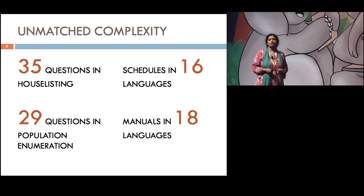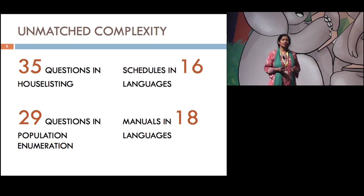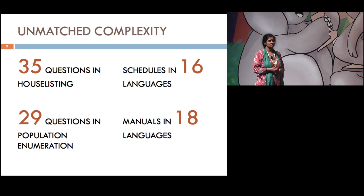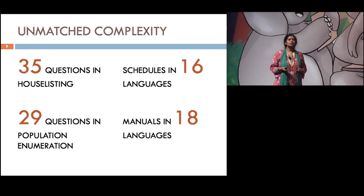It's not just plain size, it's also the complexity of the work that we do. We have 35 questions in the house listing, there are 29 questions in the population enumeration. And because the country is so large, the schedules have to be printed, filled and processed in as many as 16 languages, and the training manuals are made in as many as 18 languages.